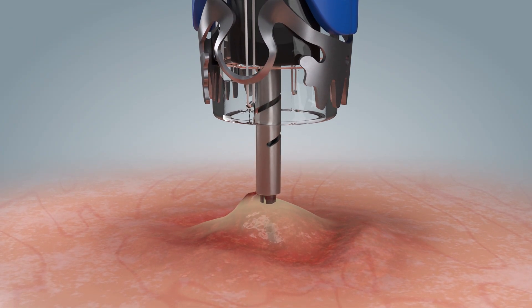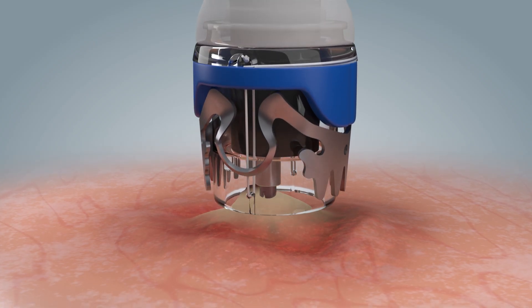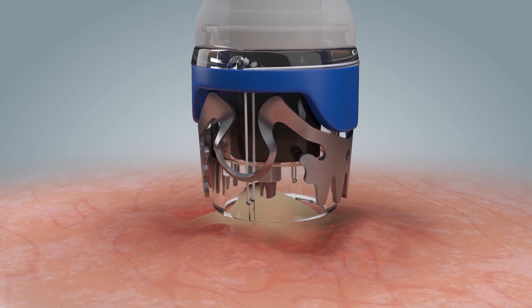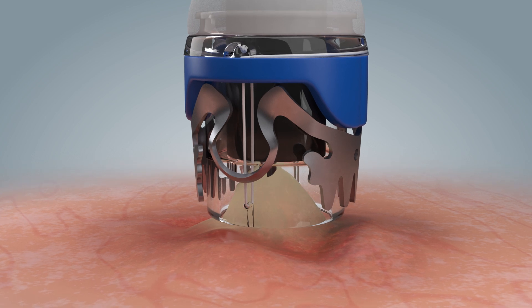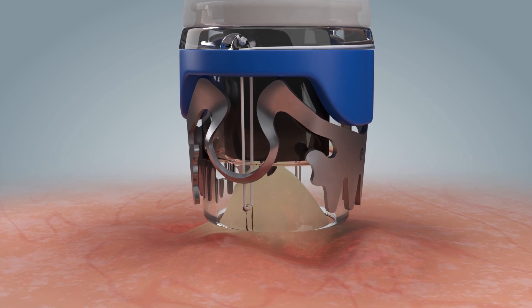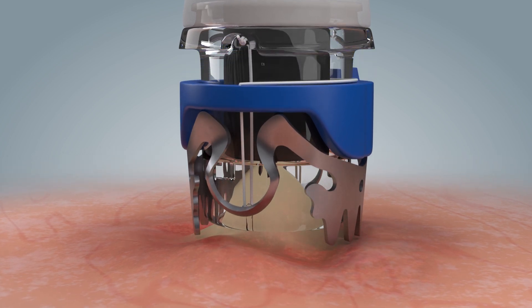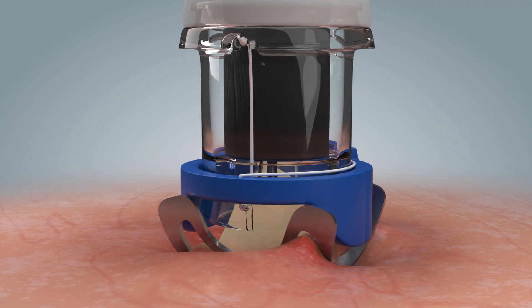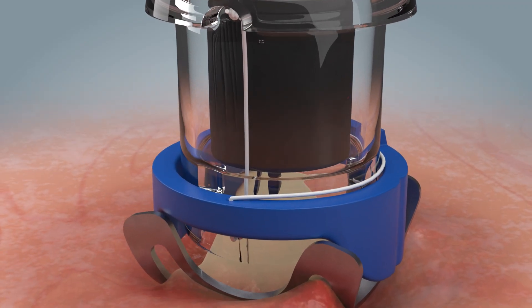In some cases, it may not be possible to fully mobilize fibrotic tissue into the cap. In this case, it is sufficient to pull the tissue to the edge of the cap with the OTSC anchor and then deploy the clip. The clip jumps slightly forward when released and is thus able to grasp tissue in front of the cap.